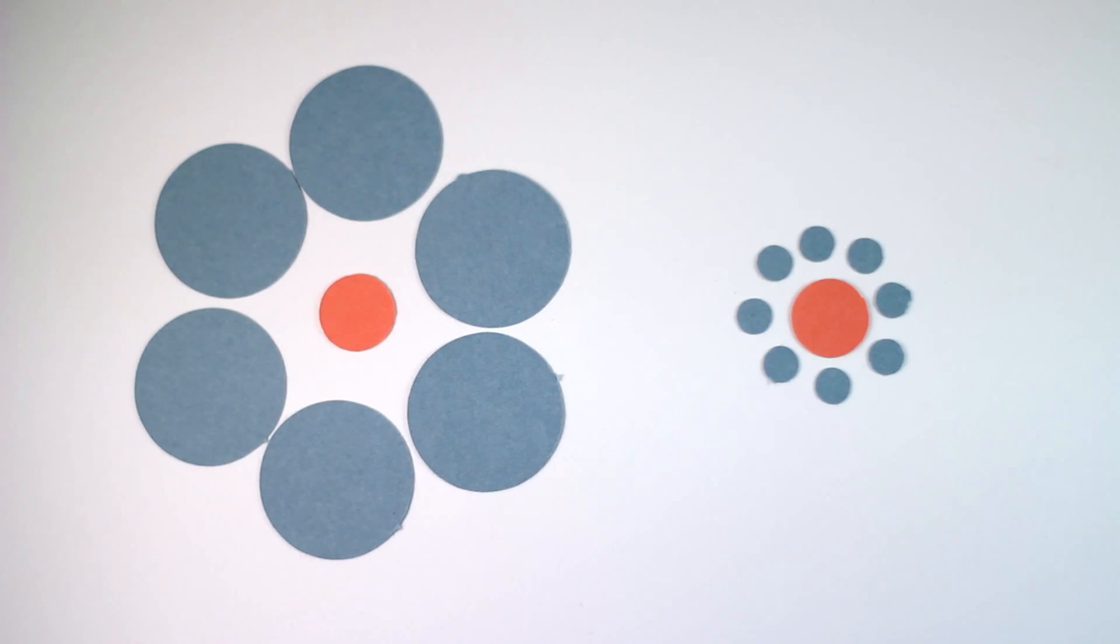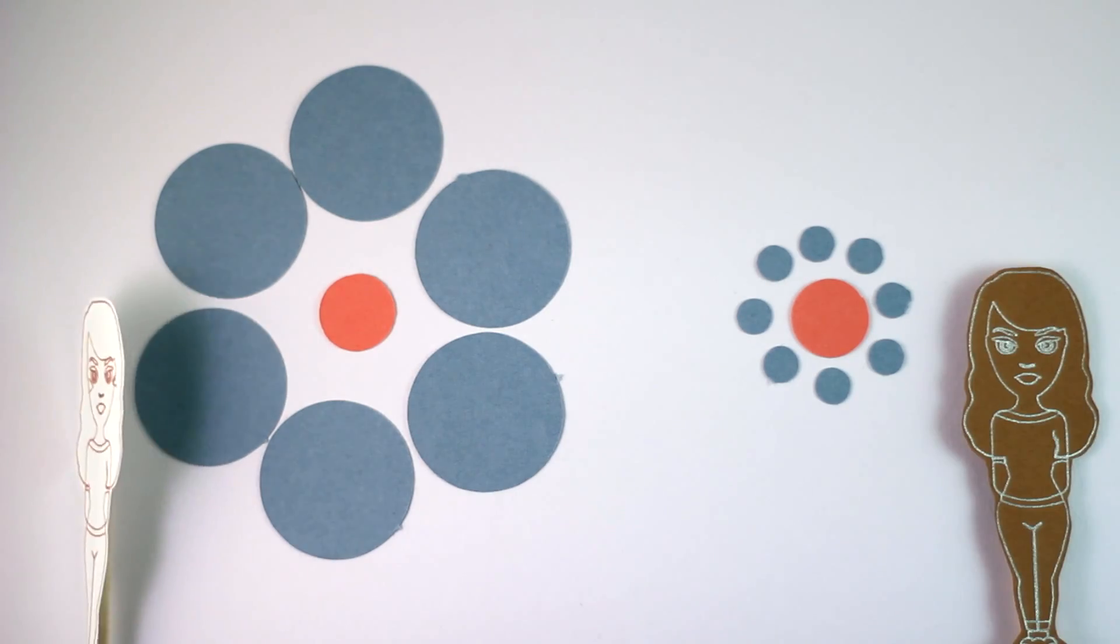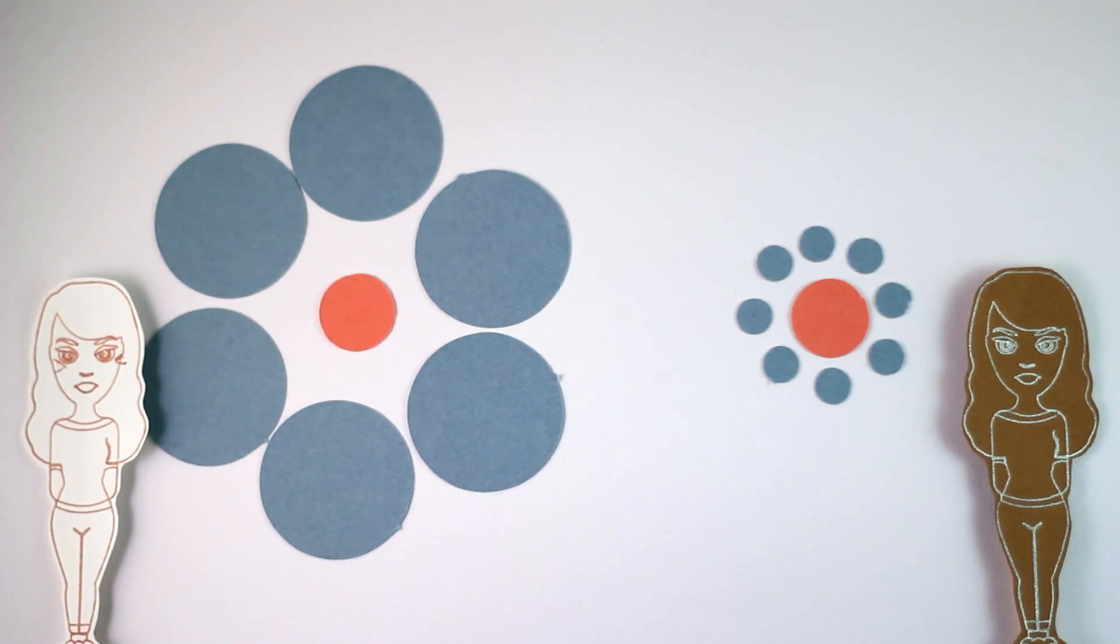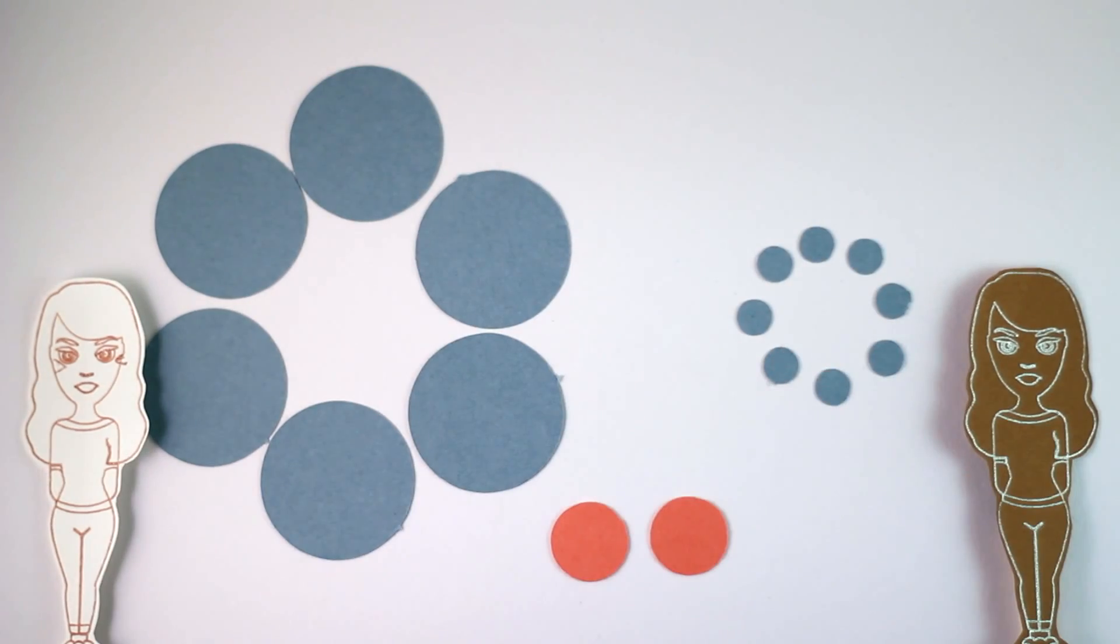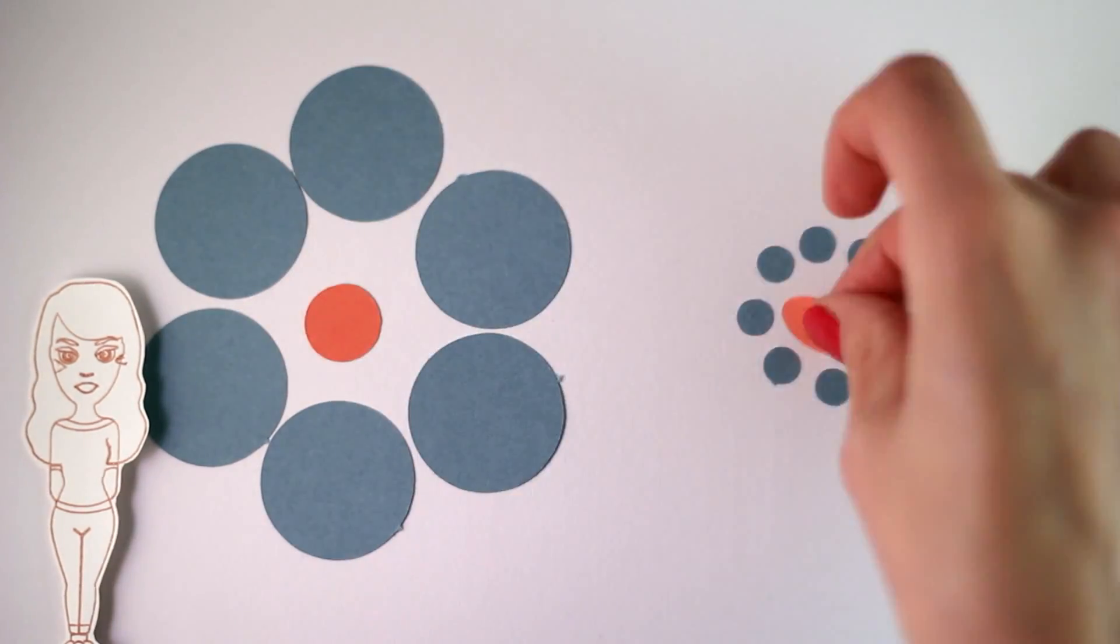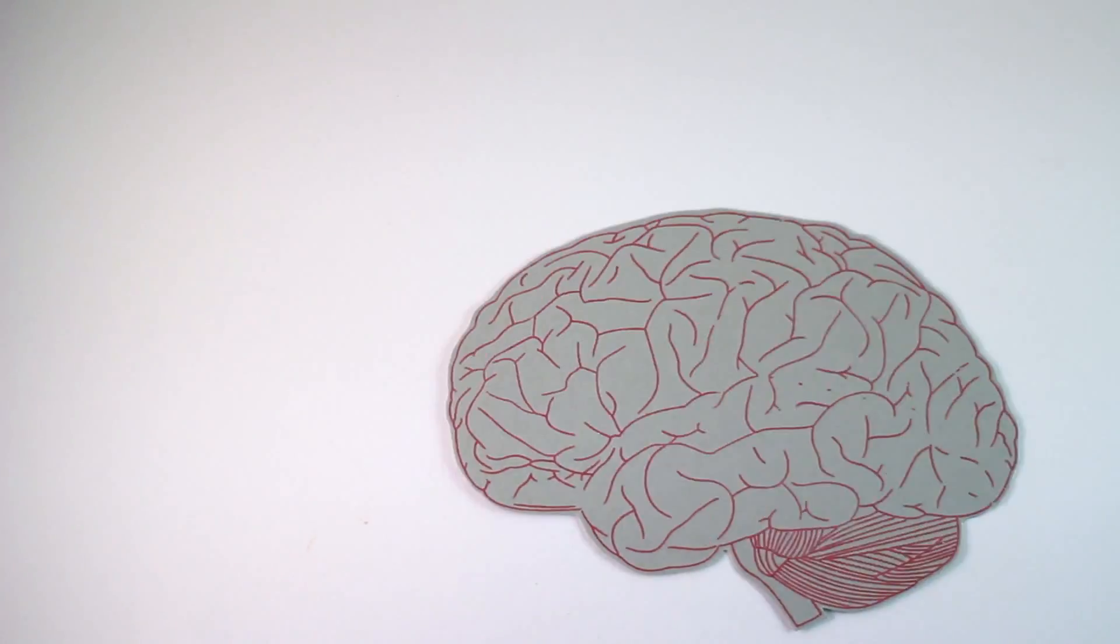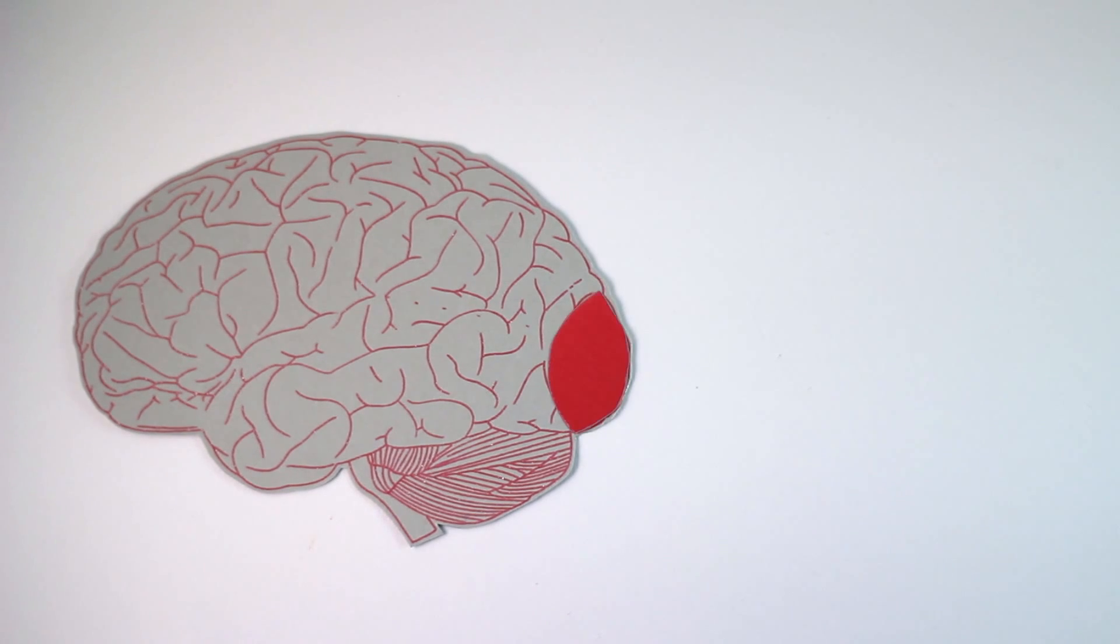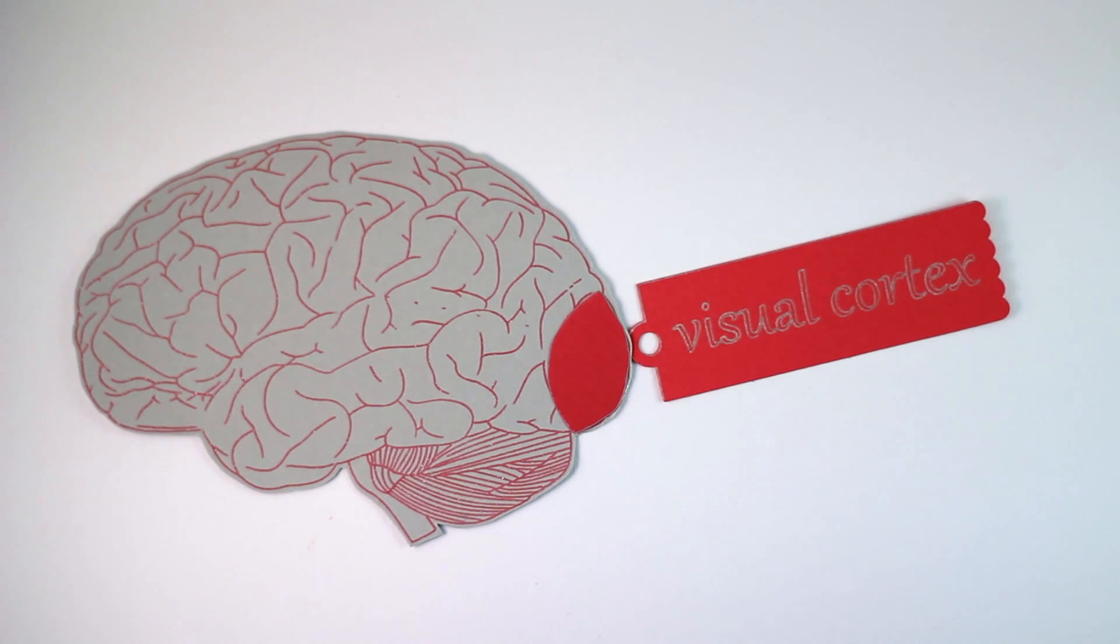In one study, researchers asked participants to judge which of these circles is larger. Even though you know these two circles are the same size, it's almost impossible to see it that way. Using fMRI, they mapped the participant's visual cortex, the part of your brain responsible for processing visual information.